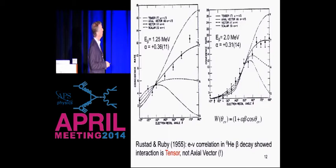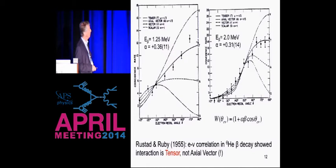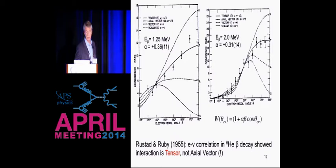As mentioned yesterday, Rustad and Ruby had done an experiment on helium-6 which clearly showed that the interaction was tensor. One should read this paper — it's just an amazing argument for how you have to be really careful if you're going to say something important. This was a measurement of the recoil spectrum, actually the angle between the electron and the recoil. The solid curve is the tensor interaction; the axial vector interaction looks different. There's no doubt from that data that it's tensor — but it's just wrong. Feynman had enough confidence in his own theory to say this experiment just can't be right. And sure enough, within a few years, much better experiments had been done.